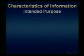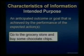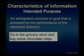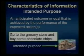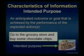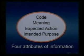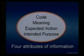The fourth characteristic is an intended purpose — an anticipated outcome or goal achieved by the performance of the expected actions. Go to the grocery store and buy some chocolate chips: the expected action was someone would go and buy the chocolate chips, but the intended purpose is to make chocolate chip cookies. So here are our four attributes: a code, meaning, expected action, and intended purpose.